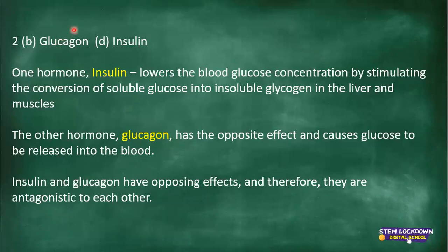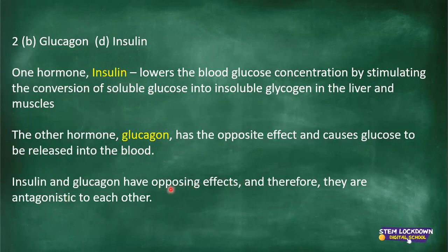They act antagonistically — they have opposing effects. Insulin lowers the blood glucose concentration by stimulating the conversion of soluble glucose into insoluble glycogen in the liver and muscles. Glucagon has the opposite effect and causes glucose to be released into the blood. Insulin and glucagon have opposing effects; therefore, they are antagonistic to each other.